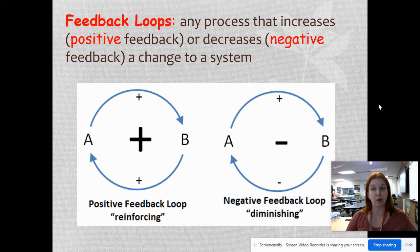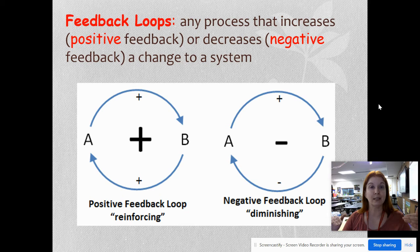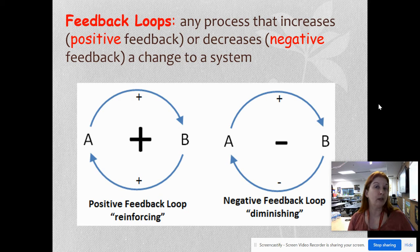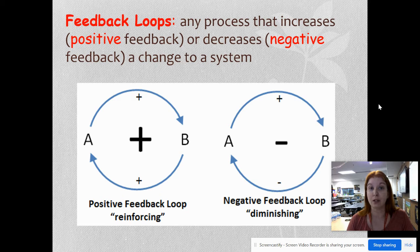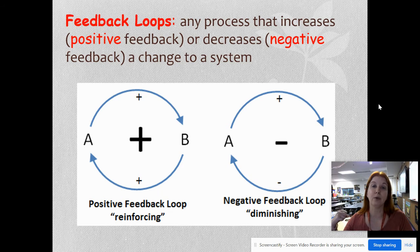A negative feedback loop is when things come back to the baseline. Something throws it out of whack and then it comes back down. You get cold, you put on a sweatshirt, you get warm again. You get too hot, you take off the sweatshirt, you get cool again — you come back to that baseline. One important thing: positive feedback loops aren't necessarily good and negative feedback loops aren't necessarily bad. Positive just means you keep going in one direction, and negative means you return to the original state.